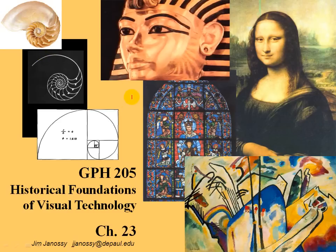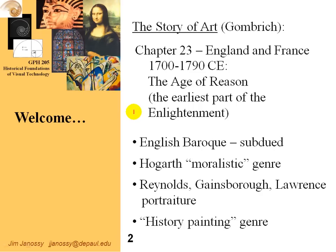This is Jim Janesey, and we're now taking a look at Chapter 23 of The Story of Art by Ernst Gombrich. This chapter covers a period that overlaps the end of the Baroque, and it focuses on England and France. We're going to be taking a look at a genre of art developed by William Hogarth, and we'll also look at portraiture by Reynolds, Gainsborough, and Lawrence, and finally wind up on history painting.